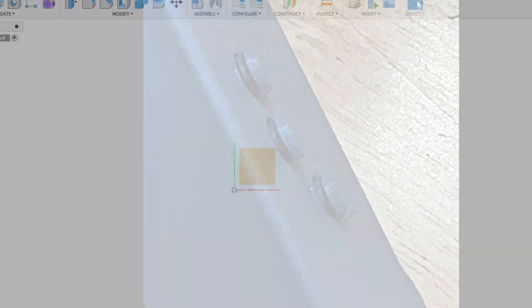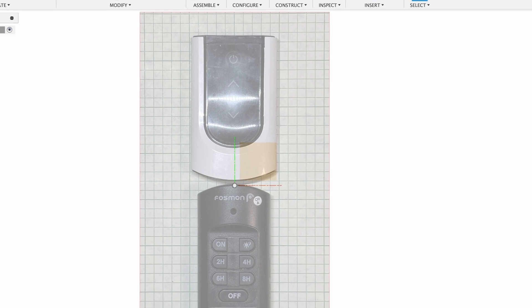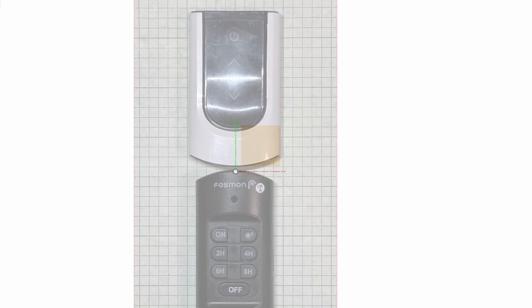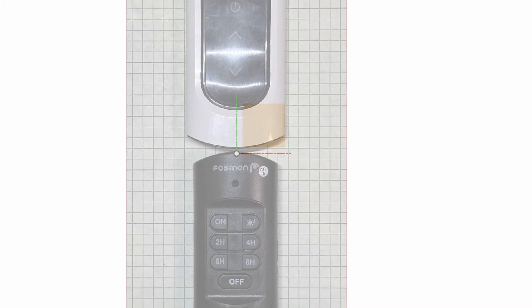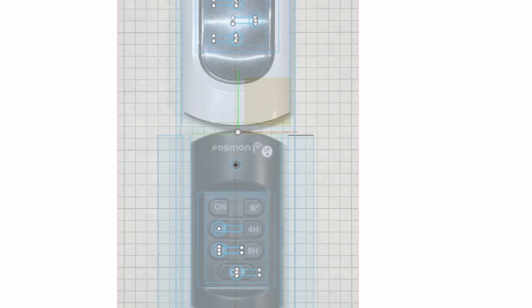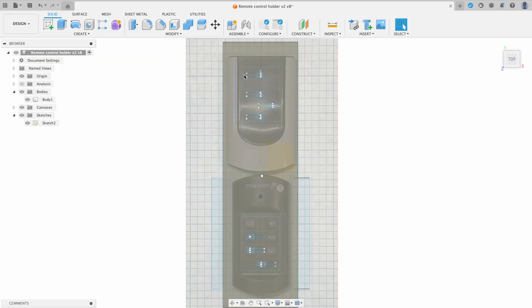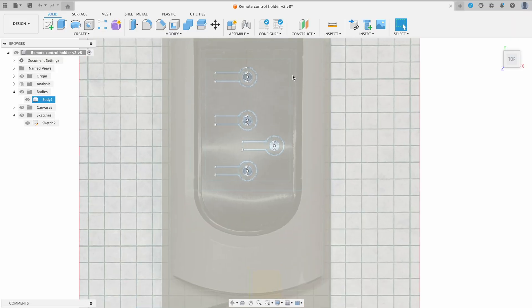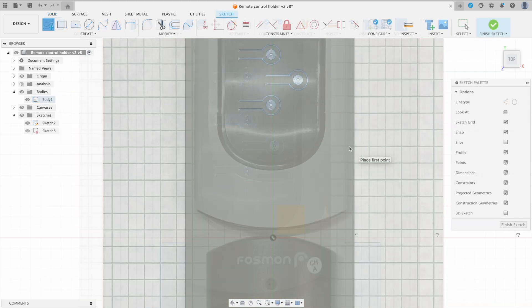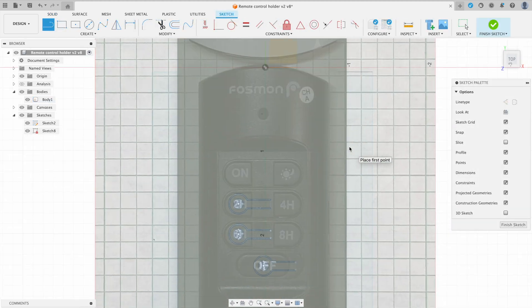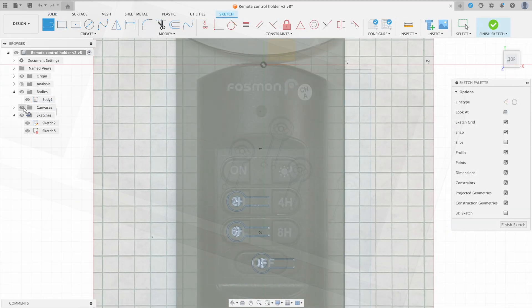In Fusion 360 I started with a photograph of the two remote controls on graph paper and I used the calibrate function to calibrate the scale of the background image. I traced out the frame of the remote controls and where I wanted the buttons. I'll put a link in the description below if you want to download the project and take a closer look.